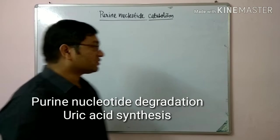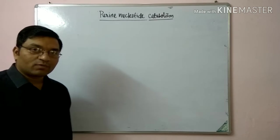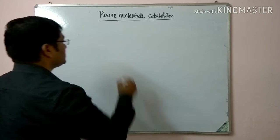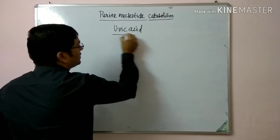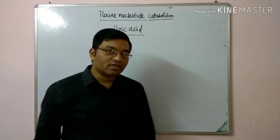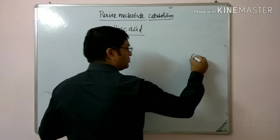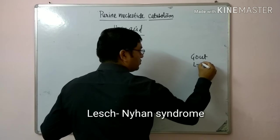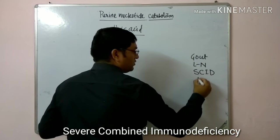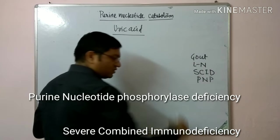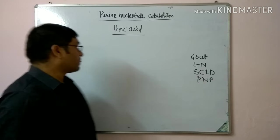Good morning friends. Today we will discuss an important topic: purine nucleotide catabolism. In the catabolism of purine nucleotides, there is synthesis of uric acid. Increase or decrease in the concentration of uric acid in blood is related to different diseases — for example, gout, Lesch-Nyhan syndrome, severe combined immunodeficiency, and purine nucleotide phosphorylase deficiency.